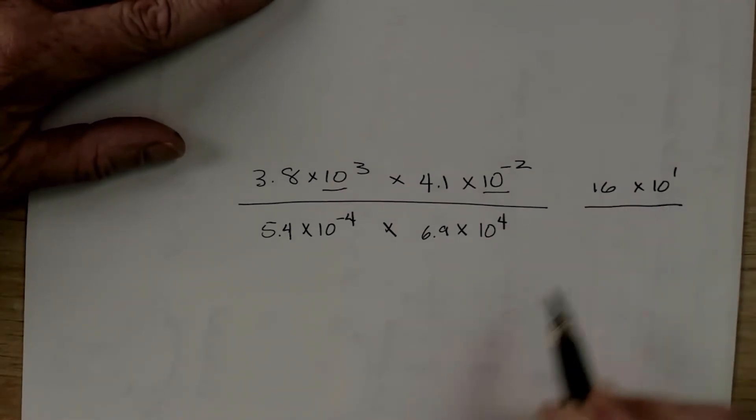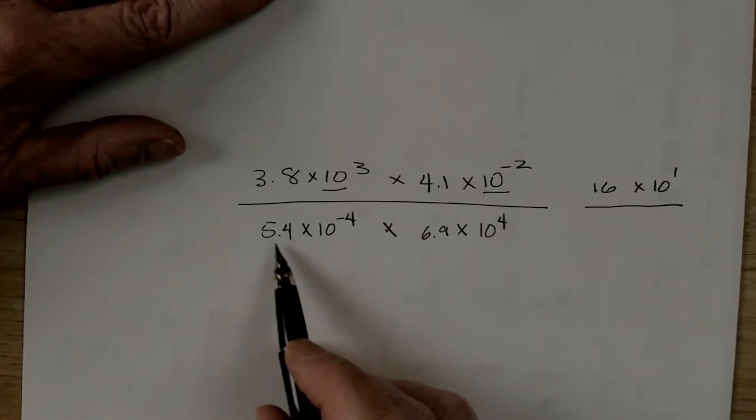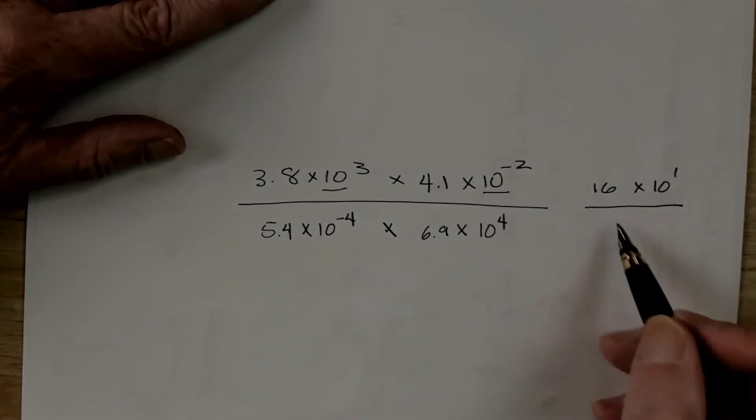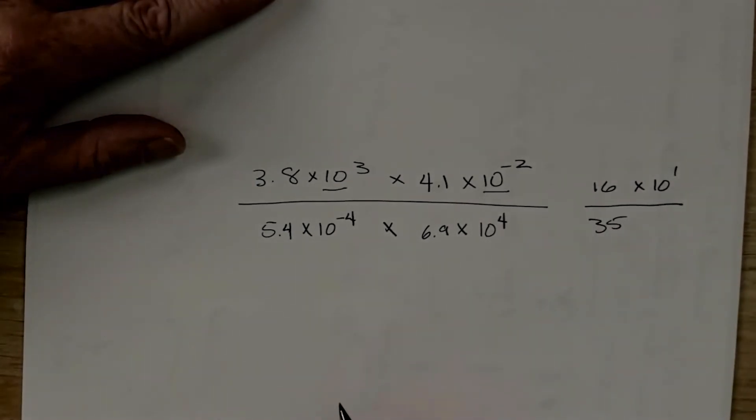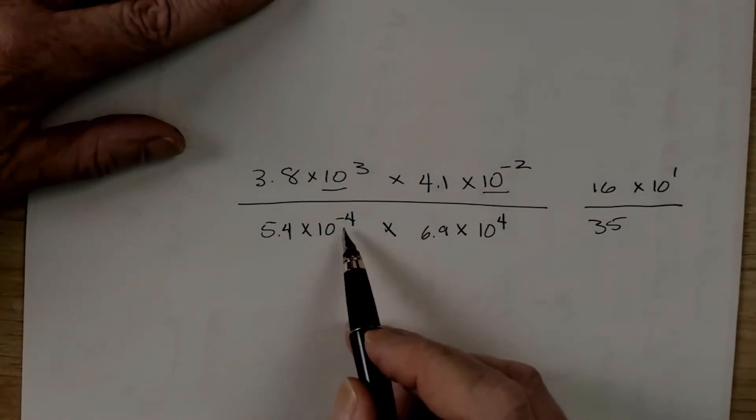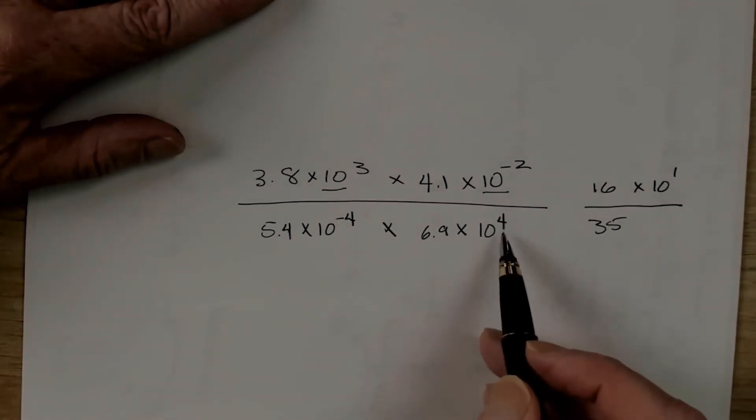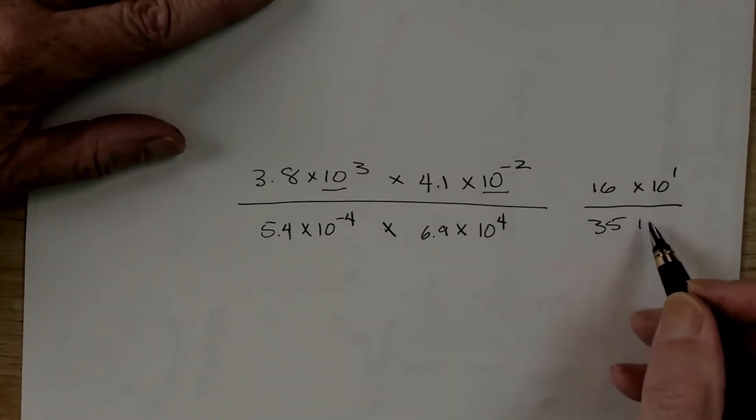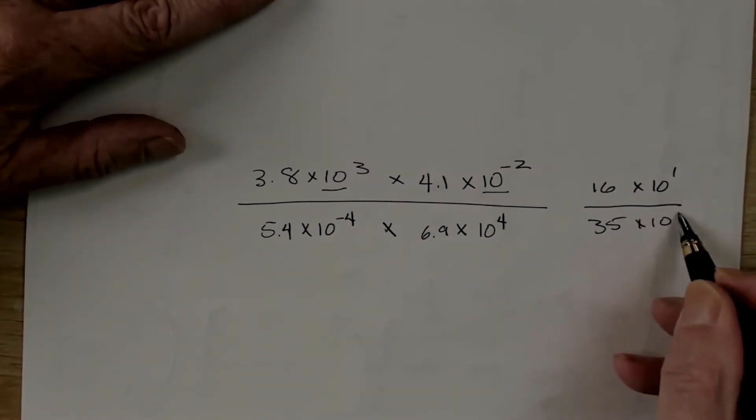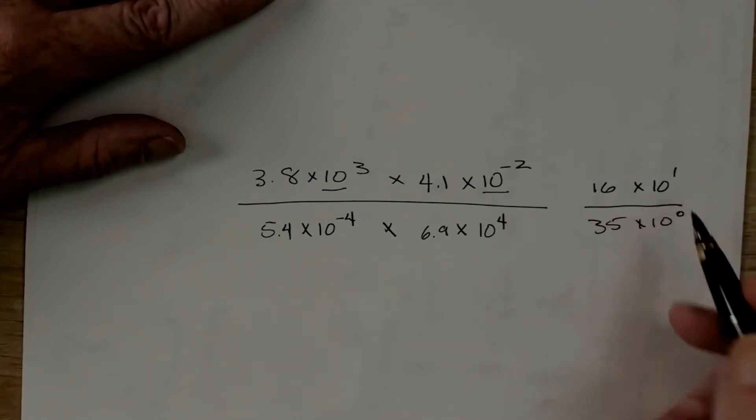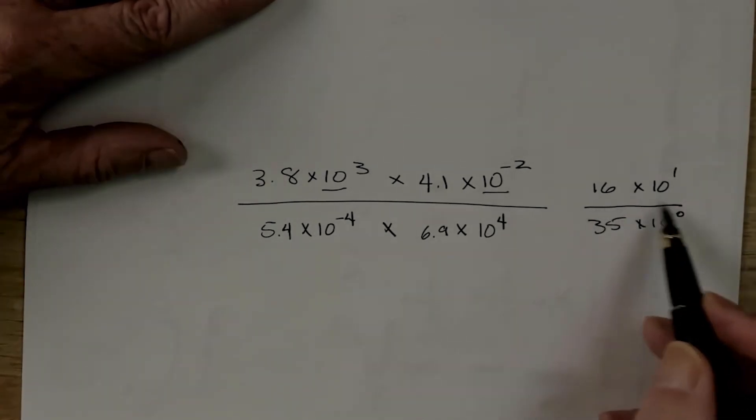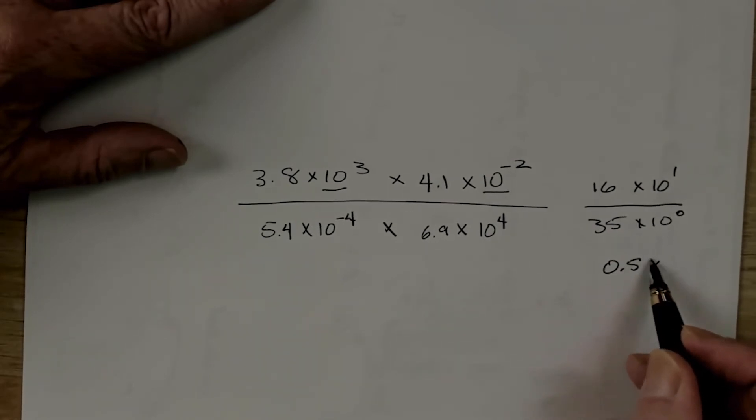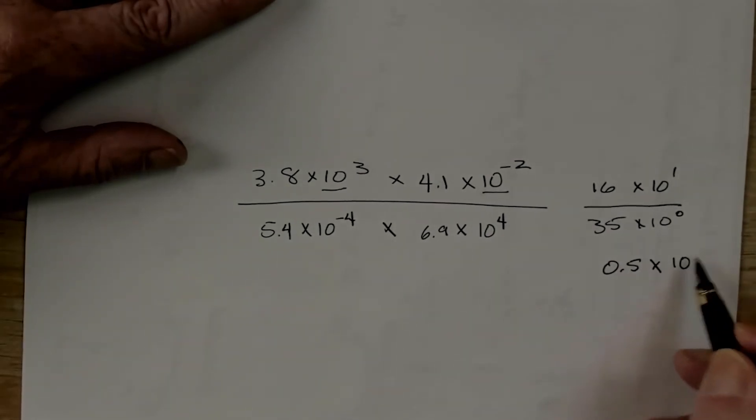Now, we'll do the same thing underneath. Here, we've got about 5 times about 7. That's going to equal about 35. We've got 10 to the negative 4 times 10 to the 4. Negative 4 plus 4 equals 10 to the 0. So, what are we going to end up with here? We're going to end up with something on the order of 0.5 times 10 to the 1.